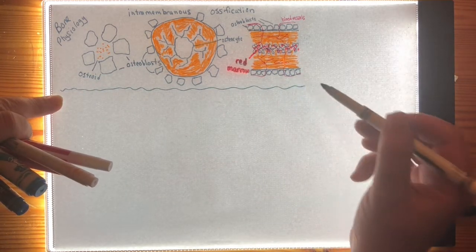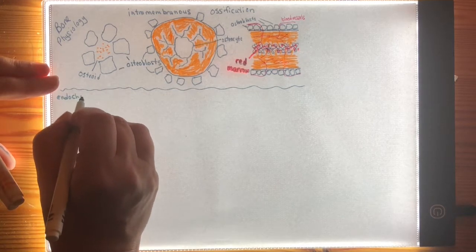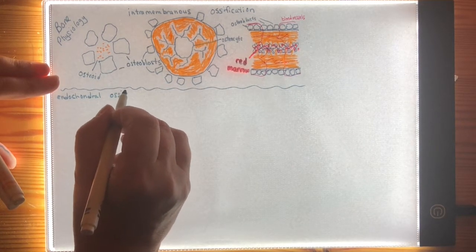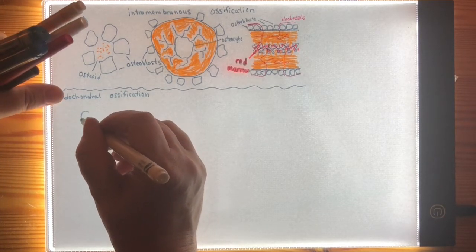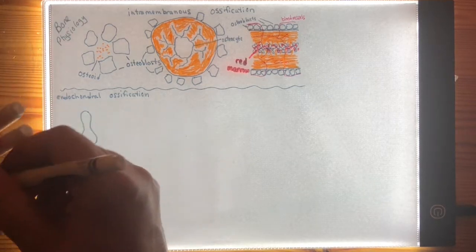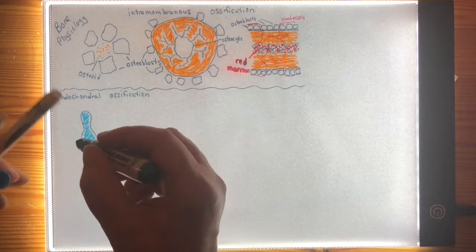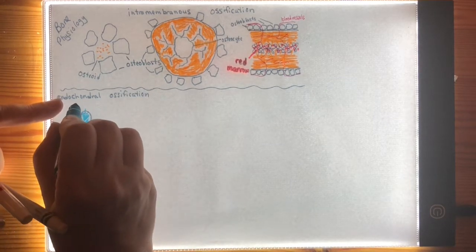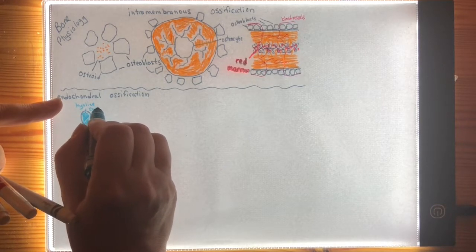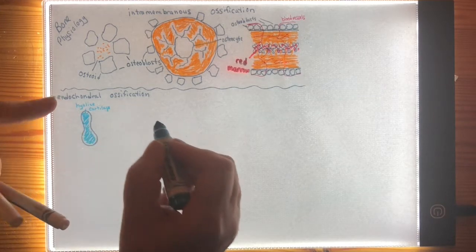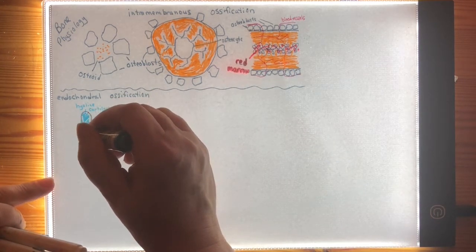We're going to study the other type of ossification, called endochondral ossification. While intramembranous ossification means within a fibrous connective tissue, endochondral means within a cartilage material. So endochondral ossification covers basically the rest of the bones of the body outside of the cranium, the mandible, and the clavicles. It is typically the long bones — like the femur or the humerus — but also a number of other bones in the body.